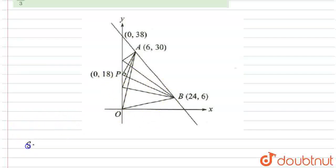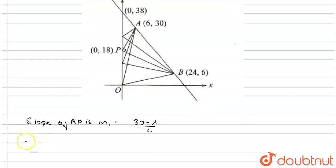The slope of line AP is M1, which equals 30 minus lambda by 6. Now, slope of line BP is M2, that is 6 minus lambda by 24.